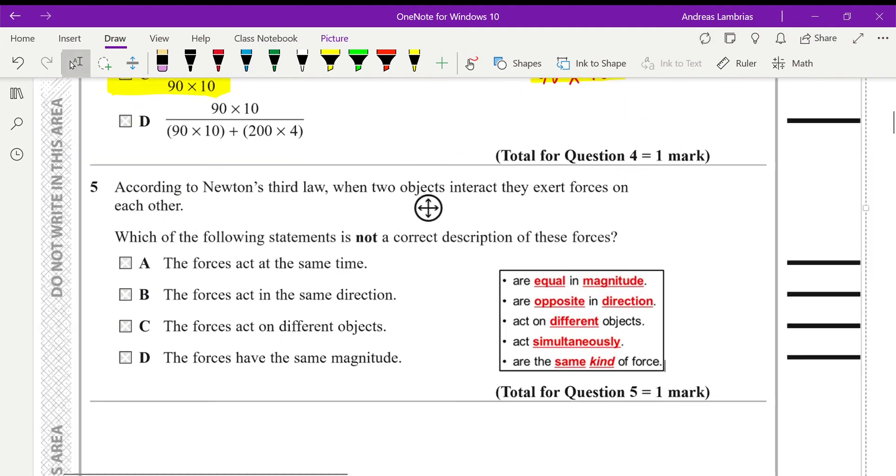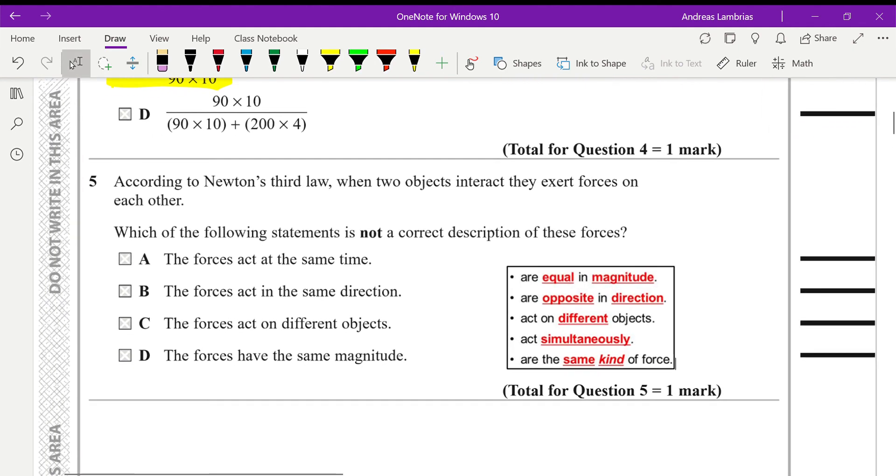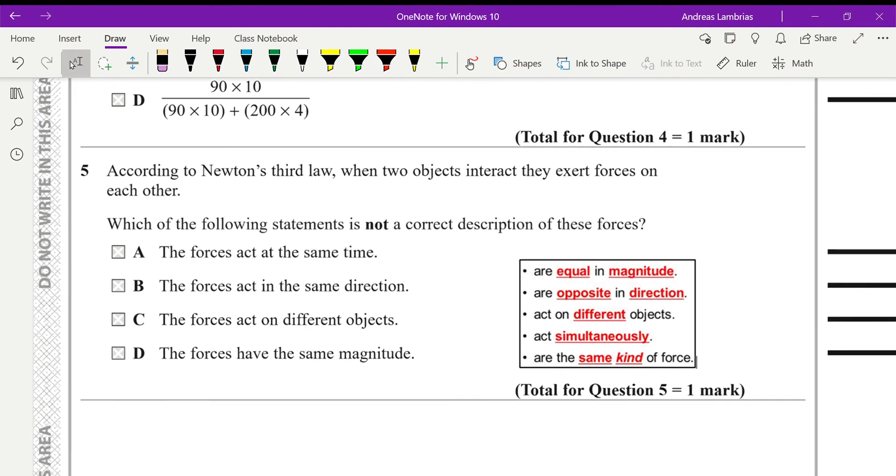And next one, question five. So according to Newton's third law, when two objects interact they exert forces on each other. So once again I'm providing some additional information about the pair of forces. So this is what describes the two forces: they're equal in magnitude, they're opposite in direction, they're acting on different objects, they're acting at the same time, and they're of the same kind, meaning same type. That means if one force is a contact force its pair has to be a contact force as well. If it's a non-contact force like weight for example, the other one should be a non-contact force as well. So if you look at this table and then you look at the options you can see that the right answer - I mean the wrong answer, in case because we're looking at the one which is not correct - is that the forces are acting on the same direction.